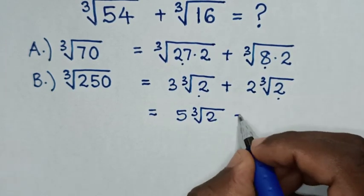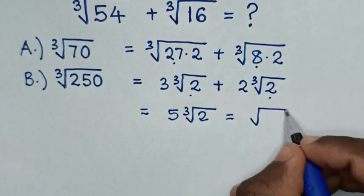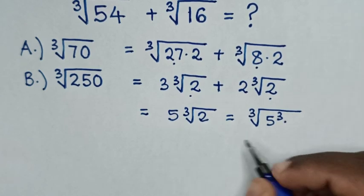Then in the next step, it will be equal to—we take this 5 under the cube root, so it will be cube root of 5 cubed times 2.